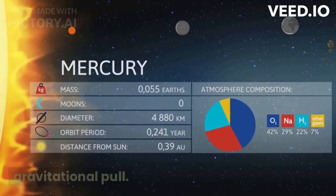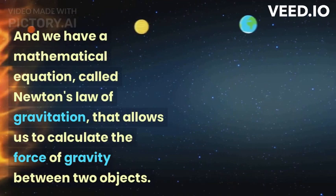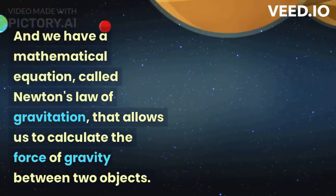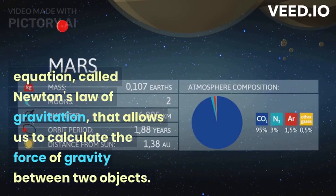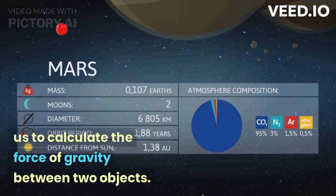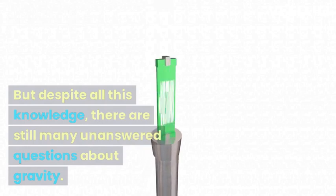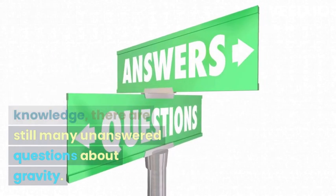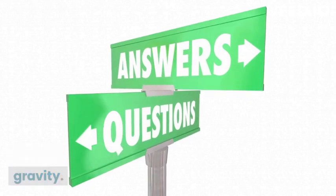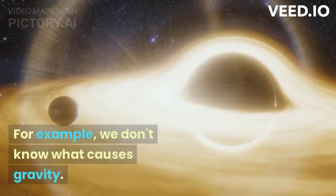We also know that gravity is related to mass. The more massive an object is, the stronger its gravitational pull. And we have a mathematical equation, called Newton's law of gravitation, that allows us to calculate the force of gravity between two objects.